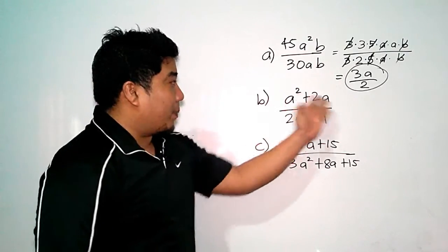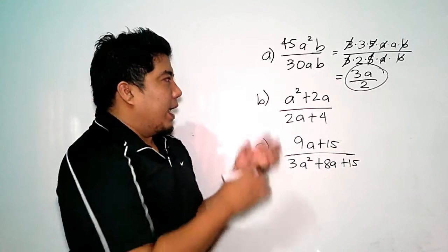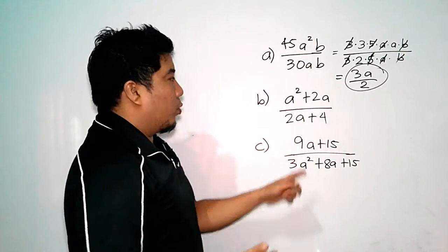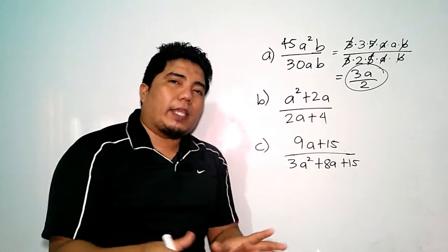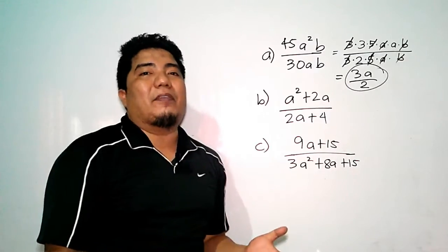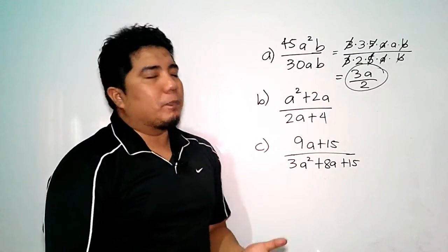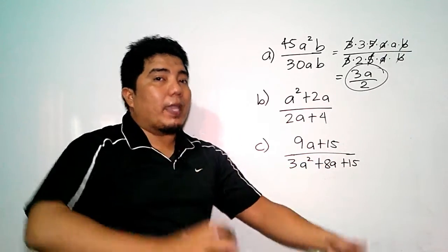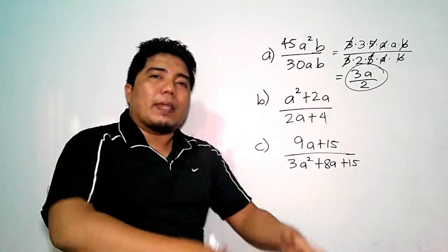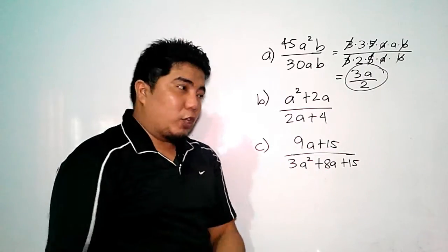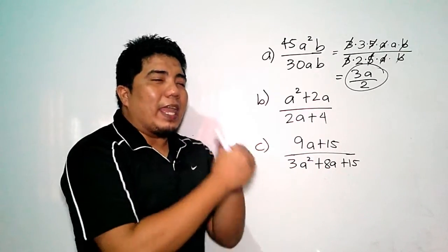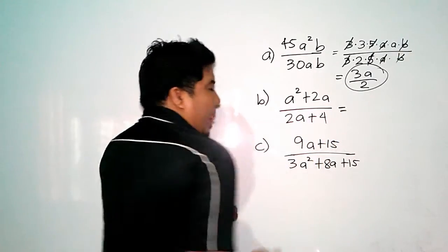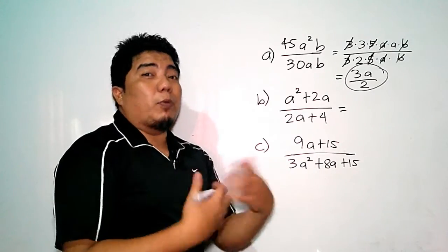Now let's look at the second example — a binomial divided by a binomial. The trick here is that you cannot simply divide individual terms across a binomial. That is a common mistake students make with rational algebraic expressions. The technique is that a binomial can only be cancelled by a matching binomial, so you need to factorize everything completely.